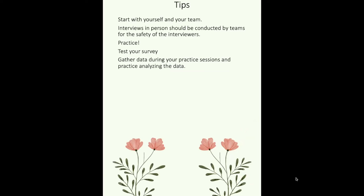A few tips for gathering data. First, start with yourself and your team — all of you take the Happiness Index, look at the data that you get, and see what you can do with that. Also think about what it felt like to take the Happiness Index. Conduct interviews in teams; this is important because you don't want anybody to be unsafe. Practice and test your survey in terms of how you're going to be using that data — for example, if you want to use the data to see how different neighborhoods or boroughs are doing, make sure all the neighborhoods and boroughs are in your questions. Make sure that you gather data during your practice sessions and practice analyzing that data, to ensure you have all the questions you need.